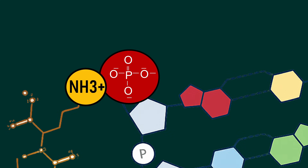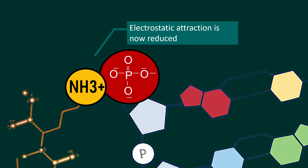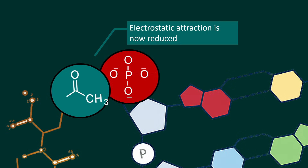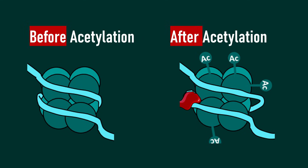Normally, the N-terminus of the histone has an NH3+ group which interacts with the phosphate group of the DNA through electrostatic interaction. This electrostatic interaction is reduced upon acetylation because the acetyl group is not charged and is bulky — it repels the phosphate group — so overall there is a looser interaction between the histone and the DNA. Before acetylation the DNA would be tightly wrapped, but after acetylation the DNA becomes loosely wrapped.